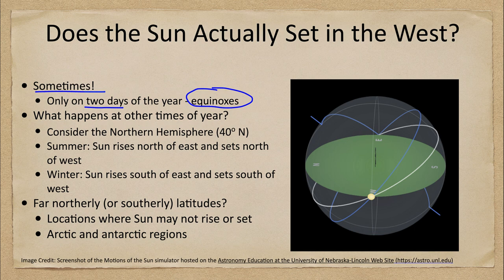On those two days the Sun is located on the celestial equator, and on those days the Sun will rise directly east and set directly west. The celestial equator is pictured here in blue, and it always passes through the east and west points of the horizon. So on those days, where the Sun is on the celestial equator, it will rise in the east and set in the west.